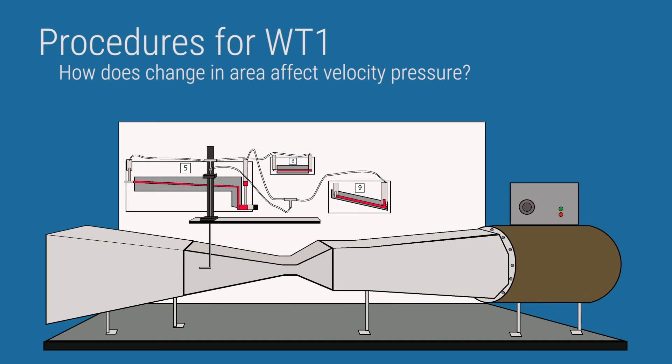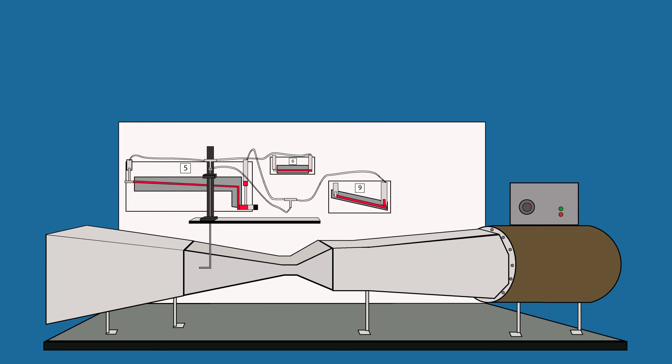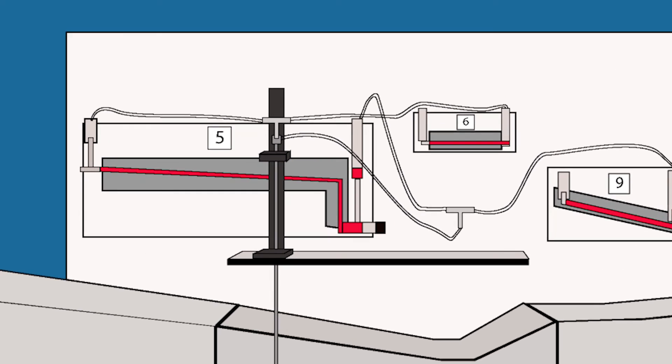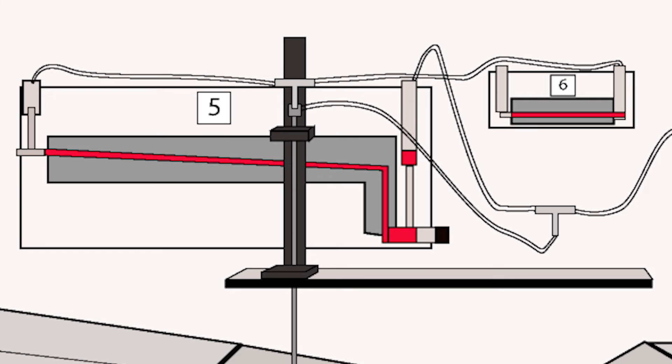The procedures for Wind Tunnel 1 are as follows. After turning on the fan and the power, install the convergent-divergent duct as shown. Connect the hoses with the fittings to the proper manometers — we're going to be using manometers 5, 6, and 9. Note that for manometer 5, we're connecting both sides: the high and the low side.